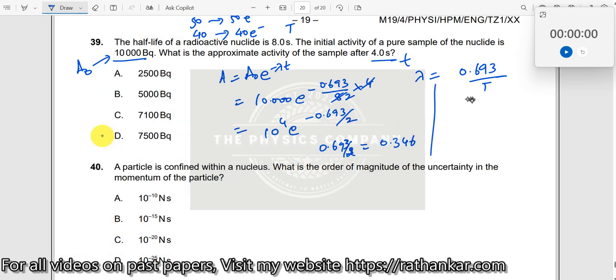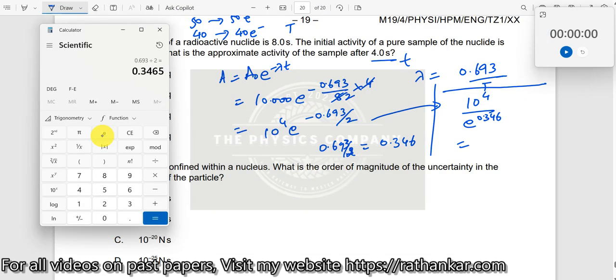Now what do I need? I need e to the power of something. So this one can be written as 10 to the power of 4 divided by e to the power of 0.346, right?